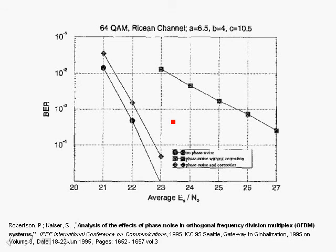If we can estimate the common phase error and compensate for it, then we get a curve that goes from a 4 dB degradation down to about 0.3 dB degradation. This shows that in an OFDM system, it is very important to compensate for oscillator phase noise in order to achieve the desired performance. Otherwise, we're not going to meet our performance requirements. It turns out that the common phase error term can be tracked using the pilots on a per-symbol basis, and actually estimated and corrected.